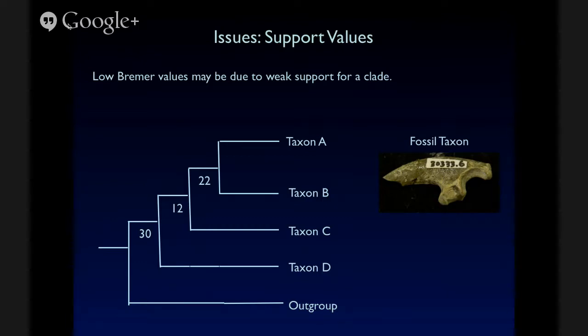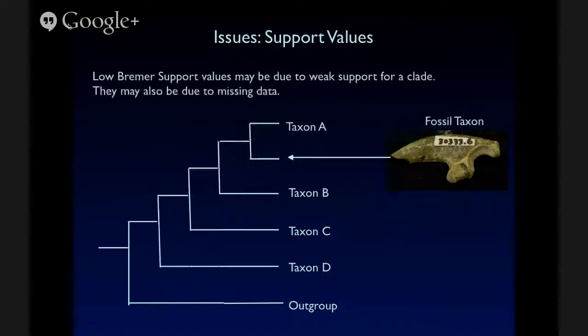So let's say we have a situation here where we have Bremer support values that are relatively high for this small phylogeny. And then we find this really fascinating toe bone. So we have this fossil bird claw, and it has some character that lets us propose that it's a sister taxon of taxon A. That's really interesting. And if we have a good character, we can put it there, and that may tell us something about the age of this clade or its biogeographic history, if this is from a different region than this clade lives today.